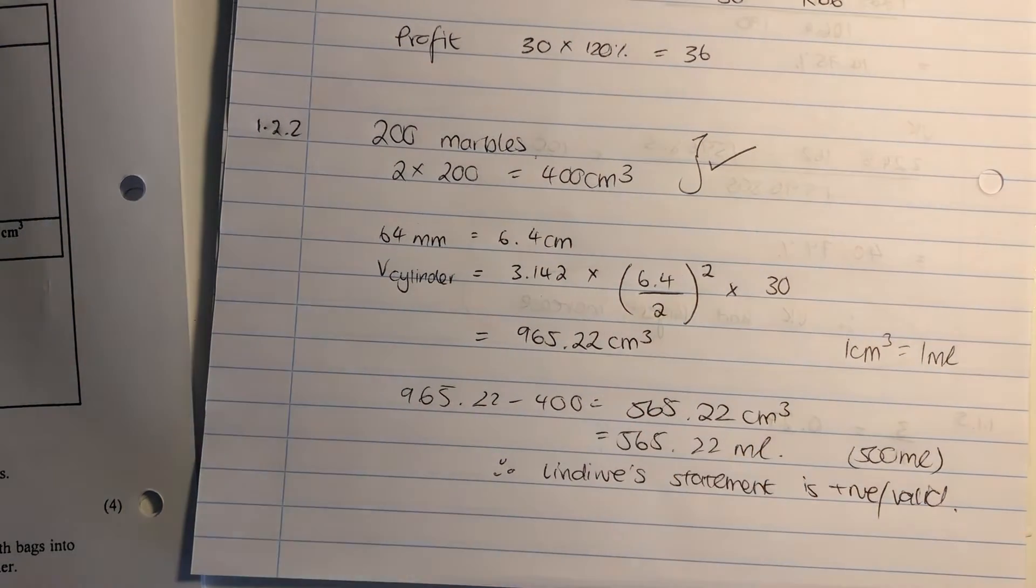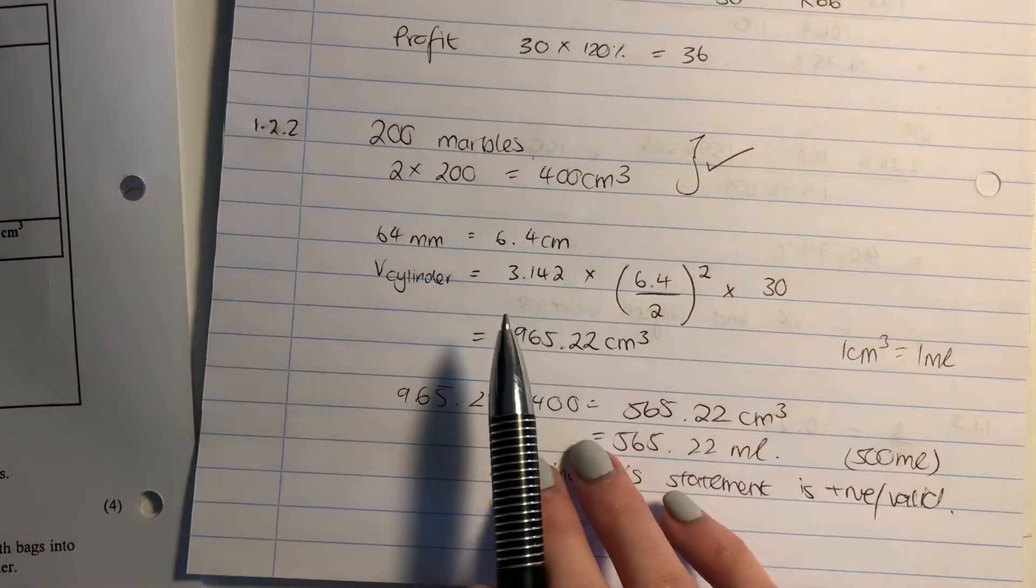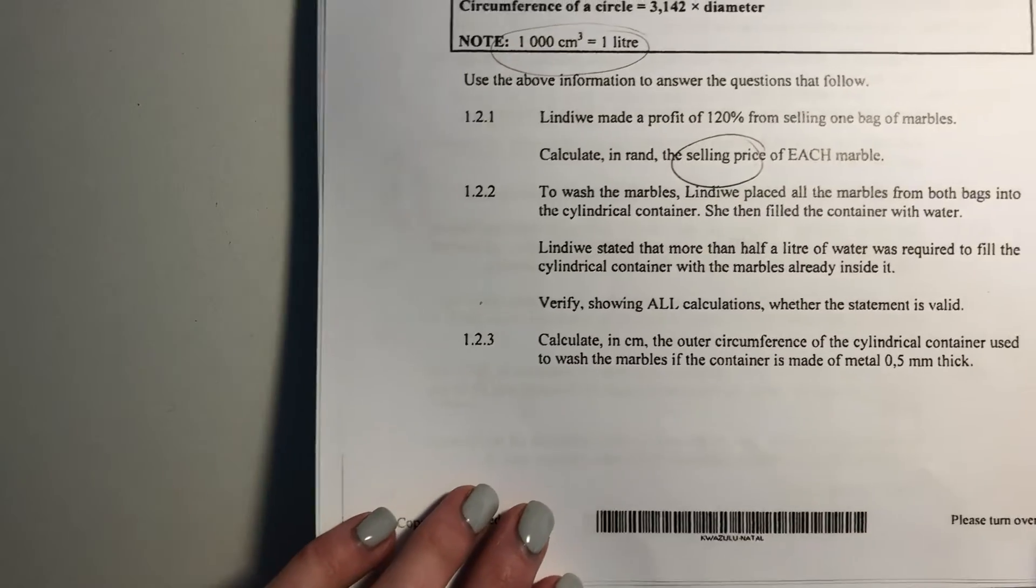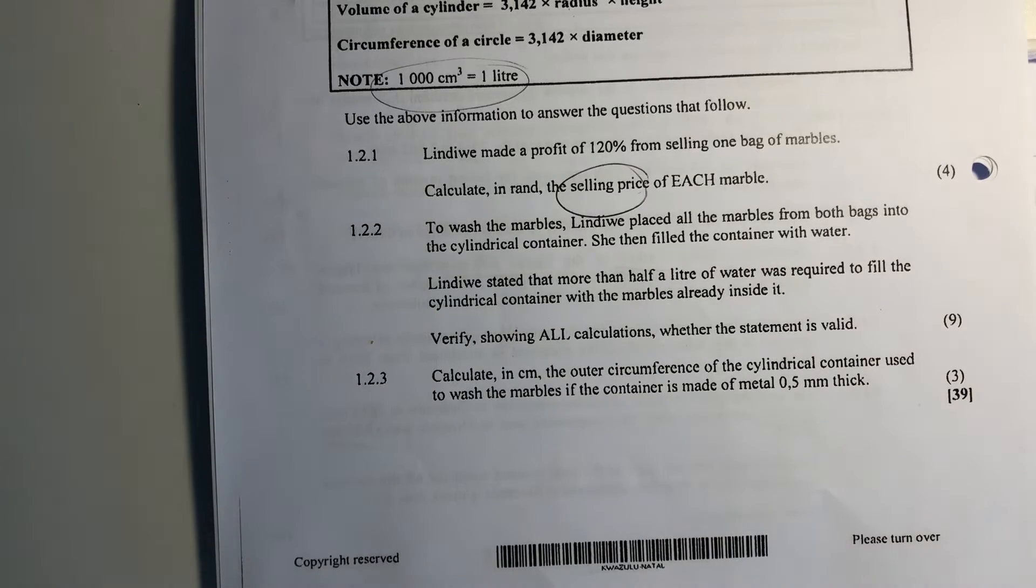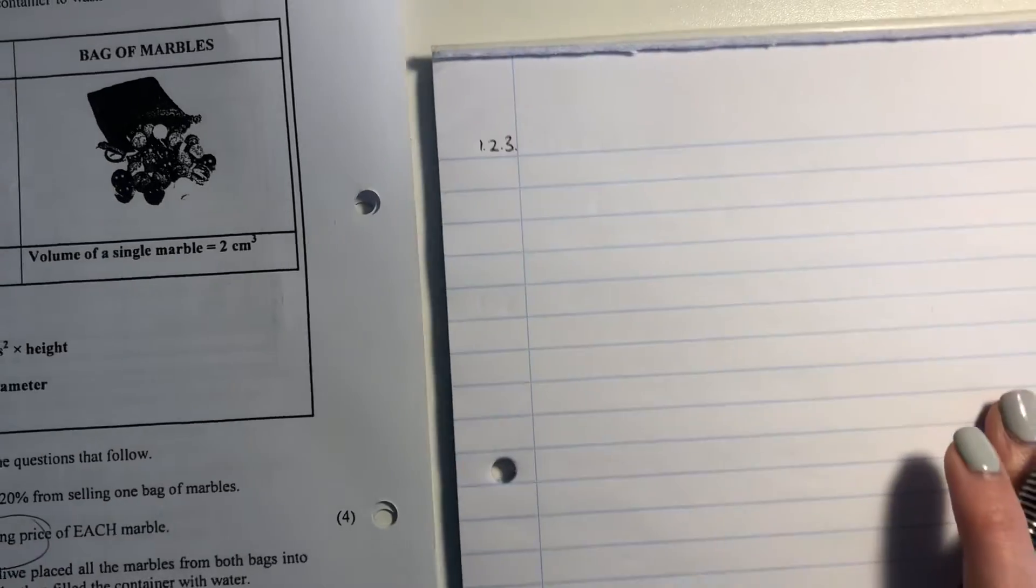That's the end of that question. Nine marks, guys, nine marks. Careful with your units. Careful to make sure that you understand what's going on. But that's a lot of marks, so work carefully. Let's move on now to the last question here. Oh, sorry, I'm making a mess of this exam pad. Okay, we're looking at 1.2.3. Let's go see. It says, calculate in centimeters the outer circumference of the cylindrical container used to wash the marble, so basically the circumference of that cylinder, if the container is made of metal of this thickness. So now I want to show you something just so that you understand.